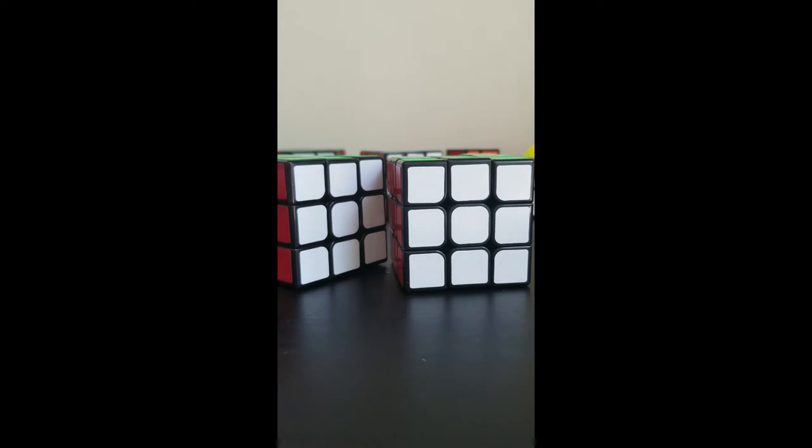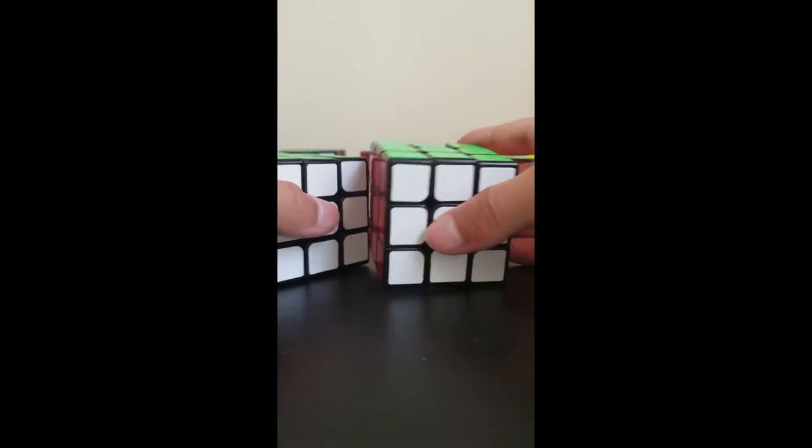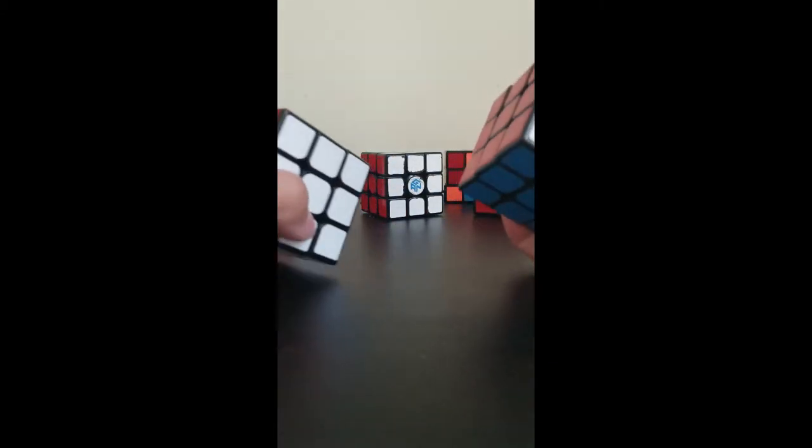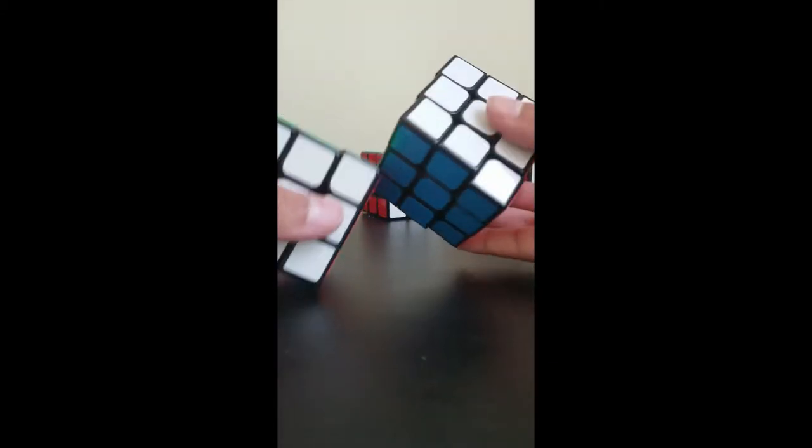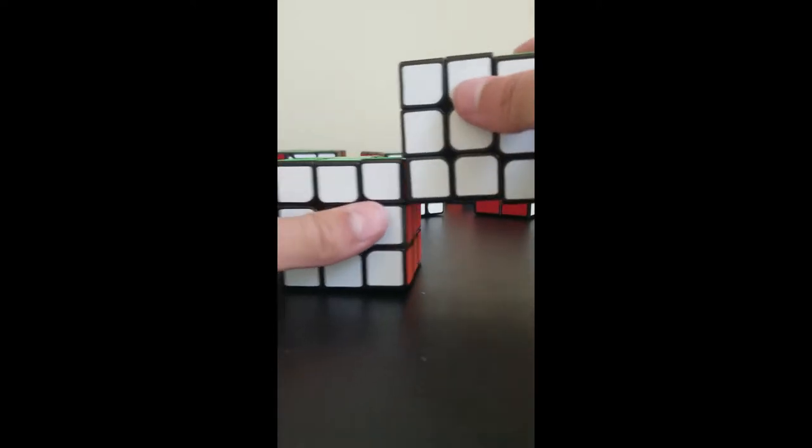You'll also need some super glue. So the first thing you'll want to do is find out which angle you want to make them Siamese. I'm going to do it at this angle where it's like this.